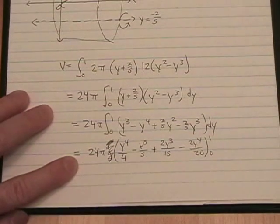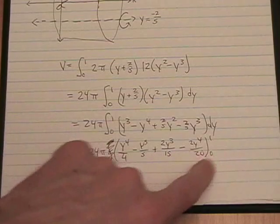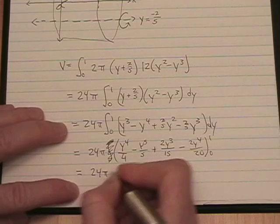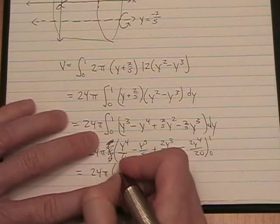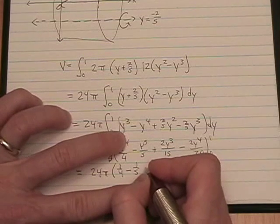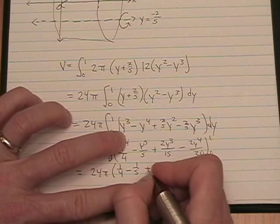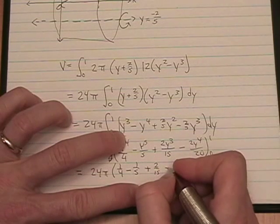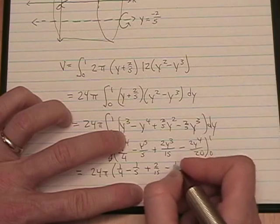When we plug in 0, this stuff all goes away. So, let's just plug in a 1 and get it over with. 24 pi times 1 fourth minus 1 fifth plus 2 over 15 minus 2 over 20, which is 1 tenth.